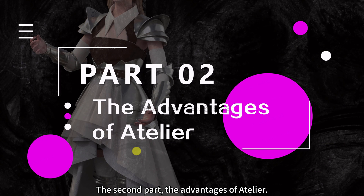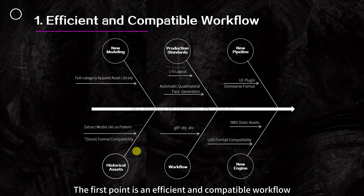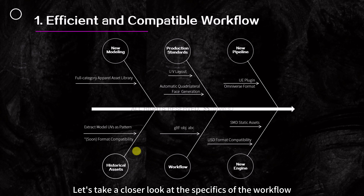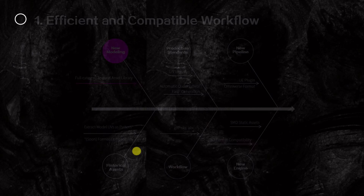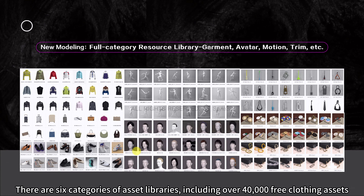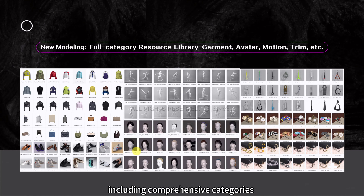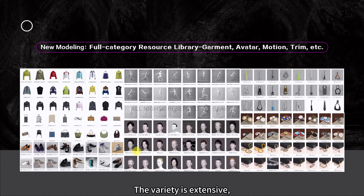Part 2: The advantages of Atelier. The first point is an efficient and compatible workflow. There is a new modeling approach with six categories of asset libraries, including over 40,000 free clothing assets covering comprehensive categories such as women's, men's, and children's.